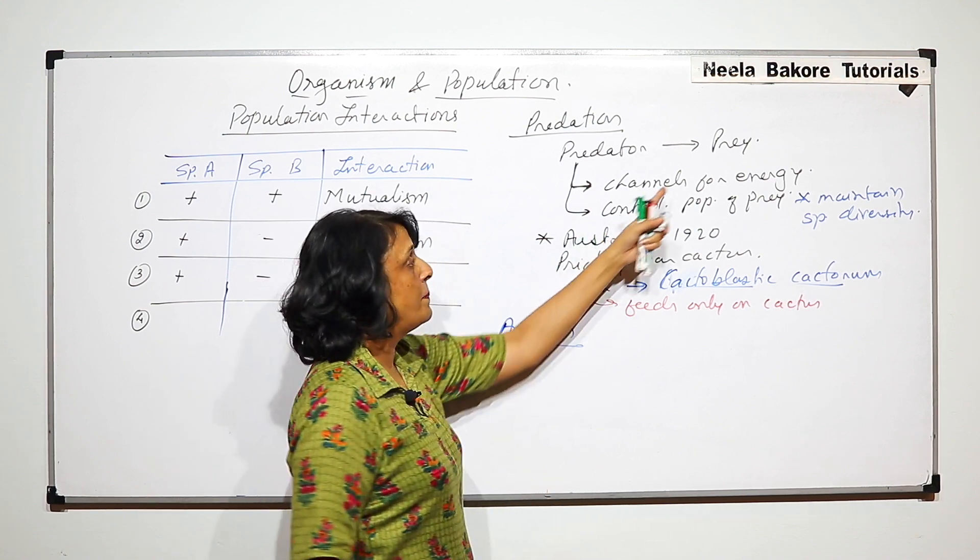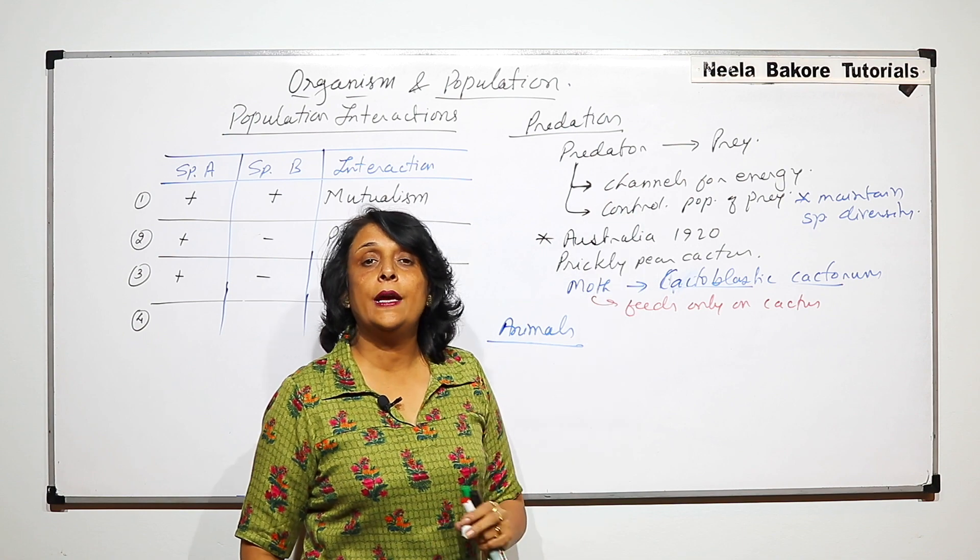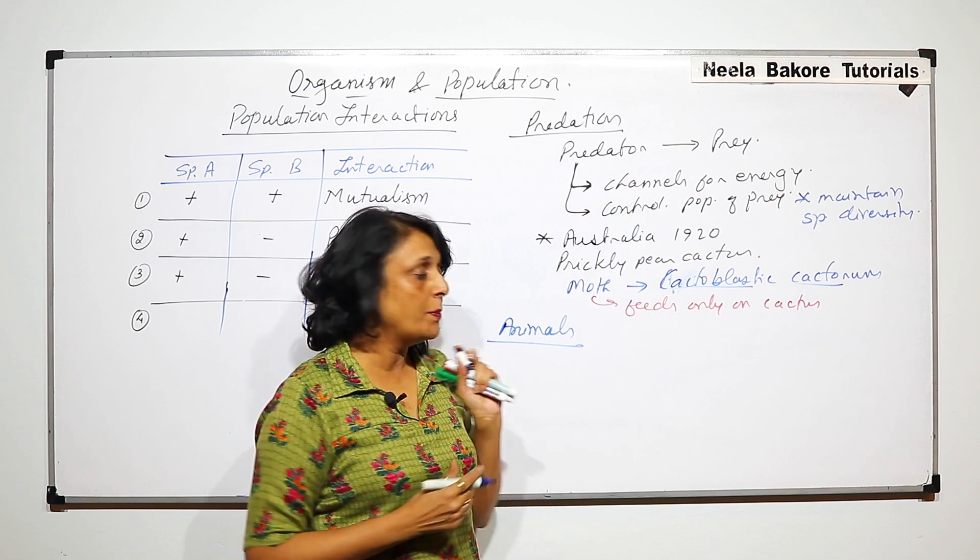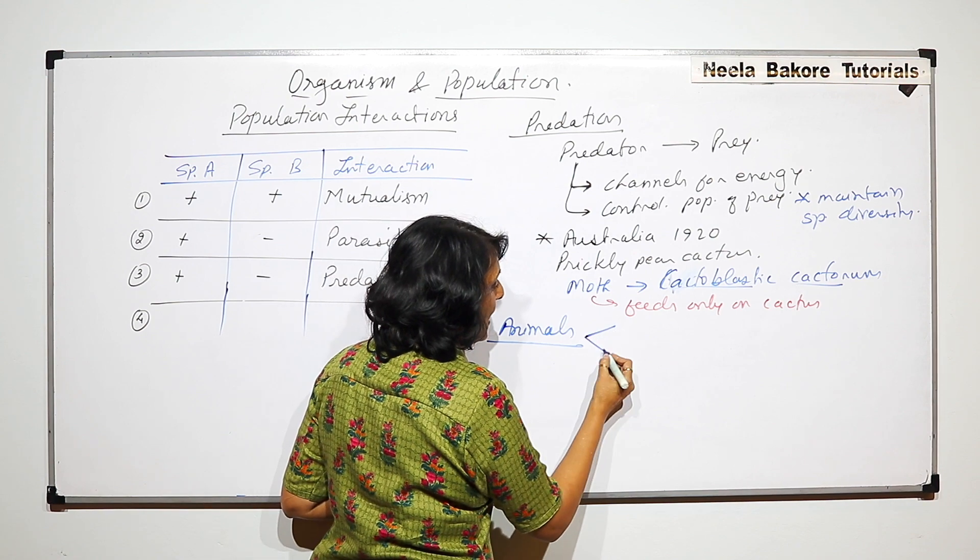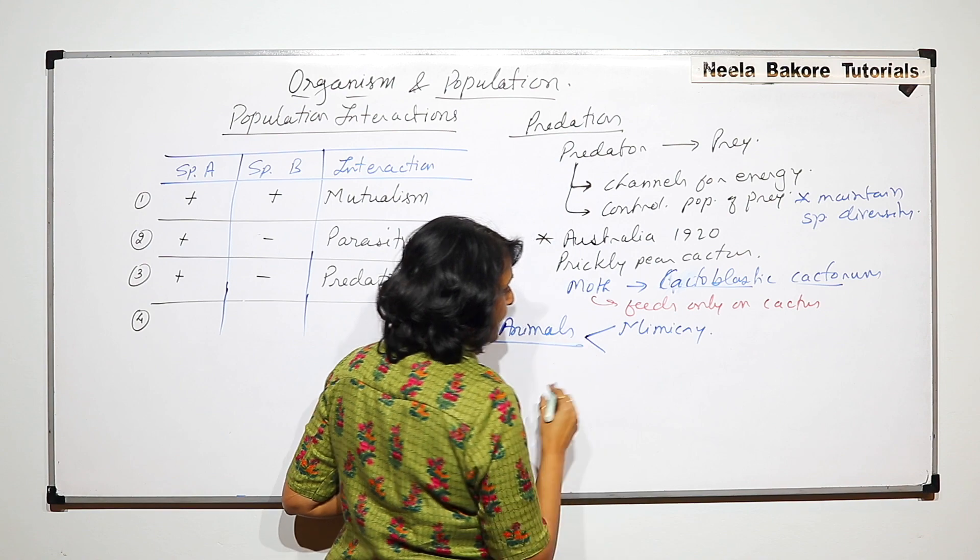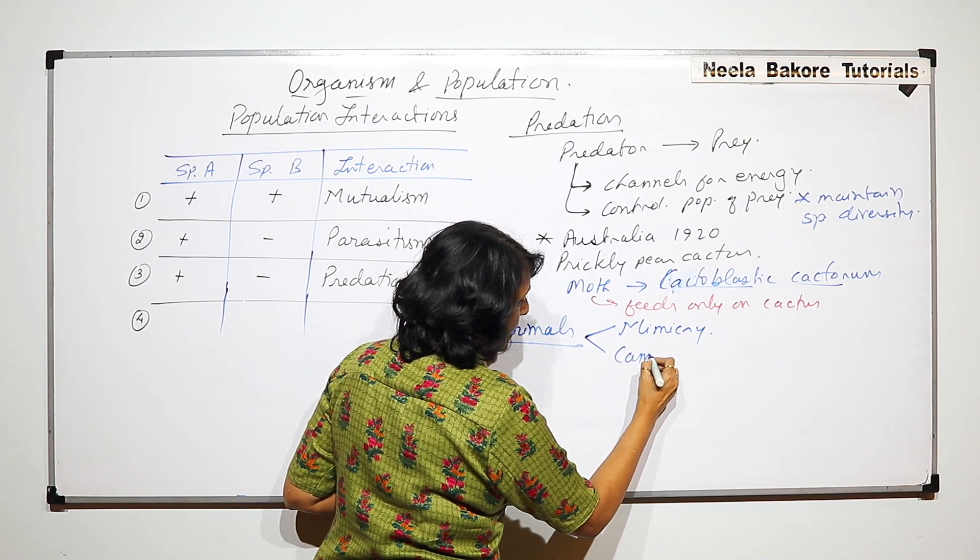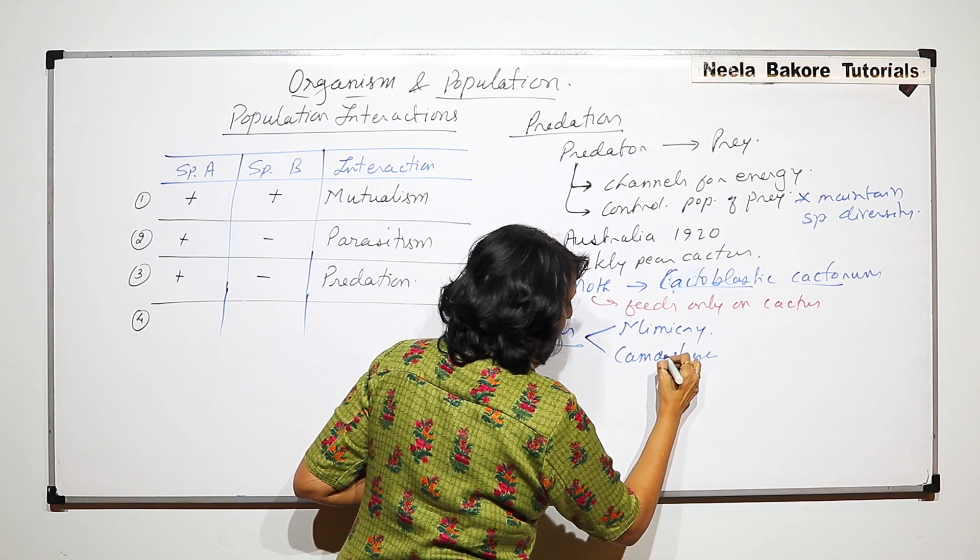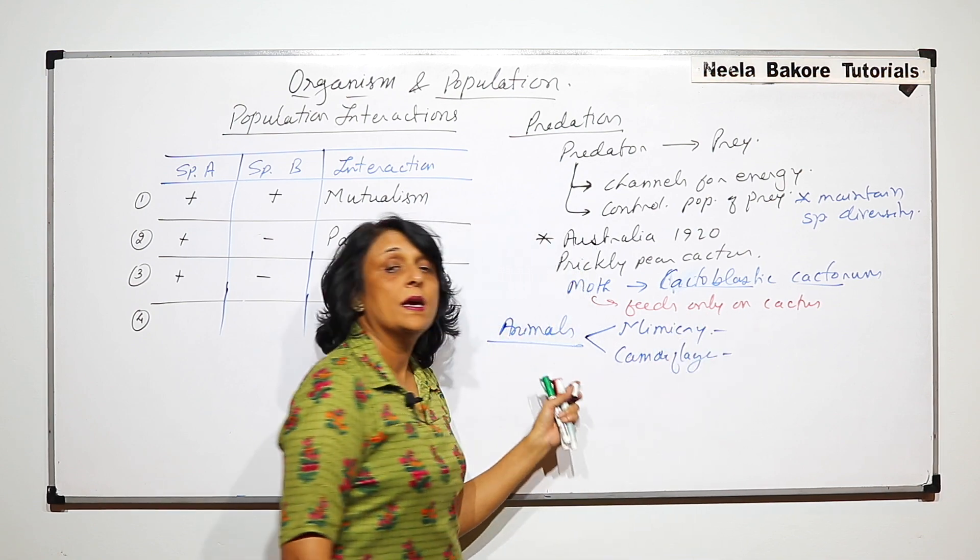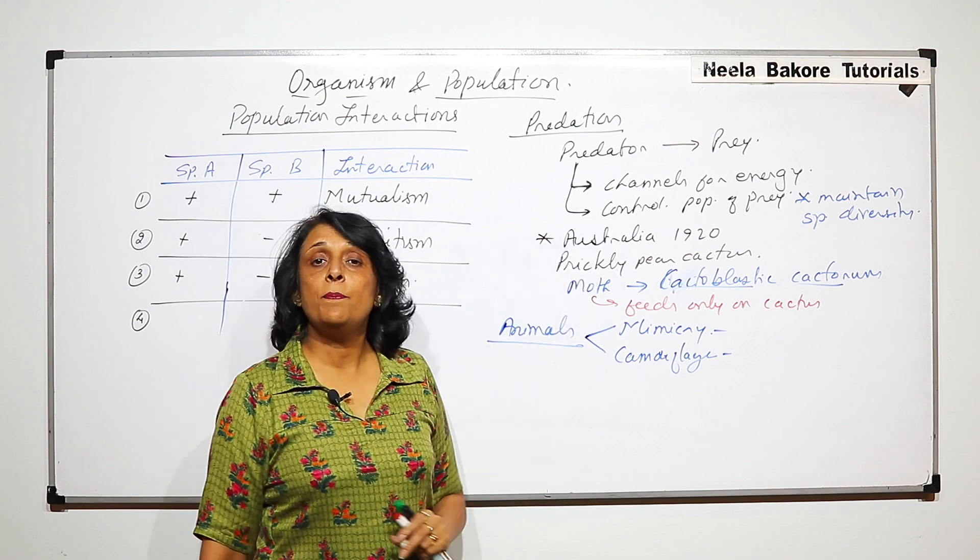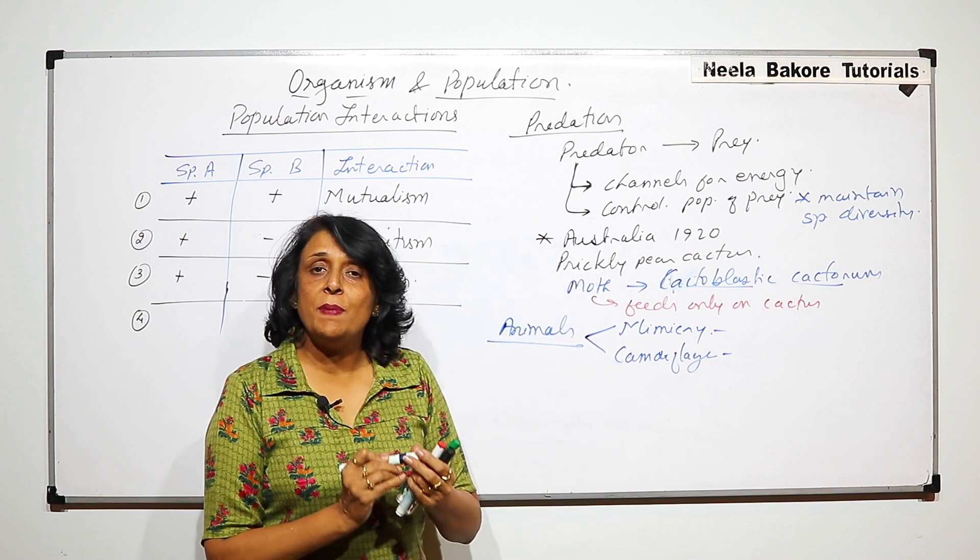If animals are prey, then how do they defend themselves? How do they protect themselves from the predators? There are two main methods: one is called mimicry and the second is camouflage.